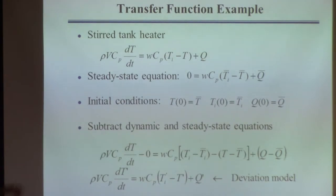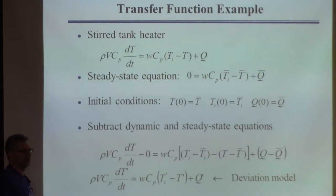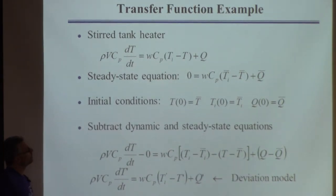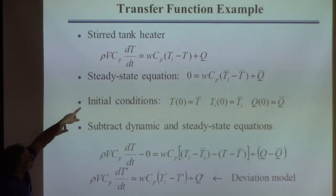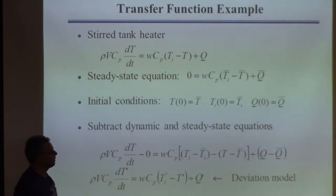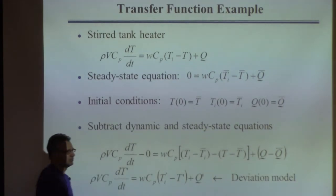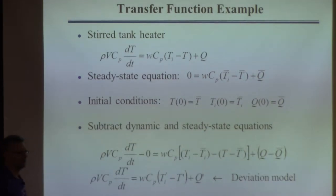You might have noticed that the original equation and this equation look a lot alike — they only differ by primes. So if someone asked me to write the deviation form of that equation, I wouldn't do all of this work; I would just put primes everywhere and be done. This is why it's justified.